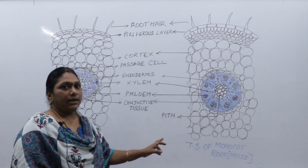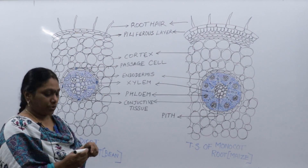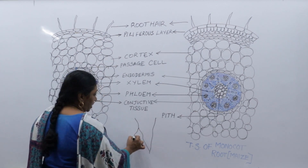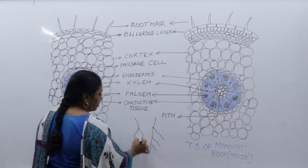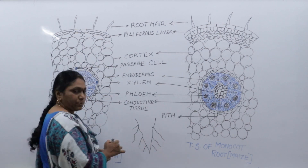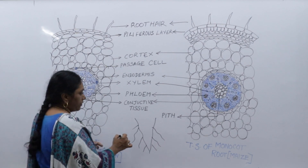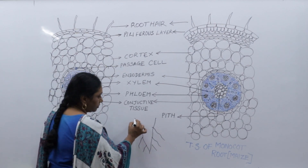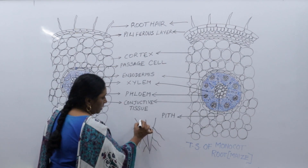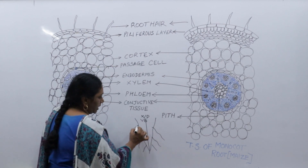TS means transverse section. When you ask a child to draw a root structure, they will simply draw a root with root hairs. But in TS, so much structure is visible. In the center, we will have vascular bundles like xylem and phloem getting arranged.